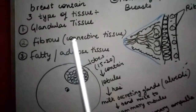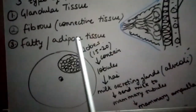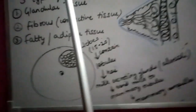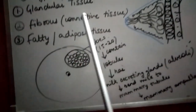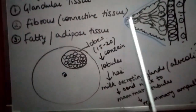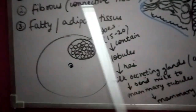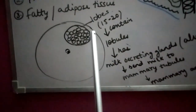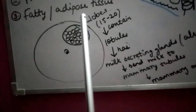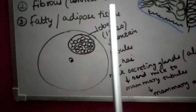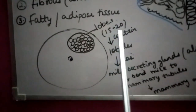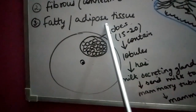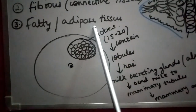The fibrous or connective tissue supports the alveoli and the ducts — it has a supporting function. The fatty or adipose tissue determines the size of the breast: the more adipose tissue present, the larger the breast appears.